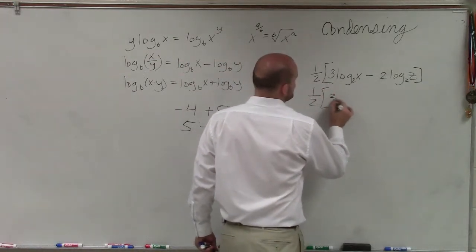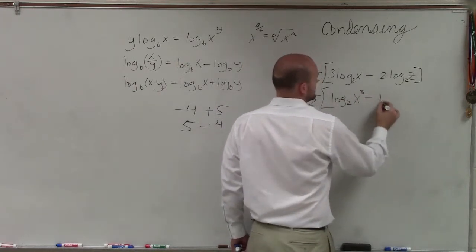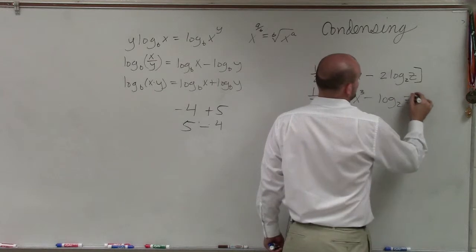So I'll have this as 1 half times, I need to rewrite the 3 up, so it's log base 2 of x cubed minus log base 2 of z squared.